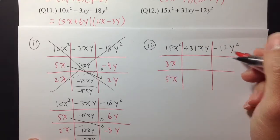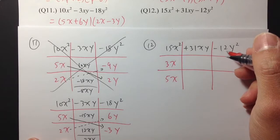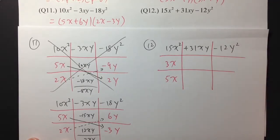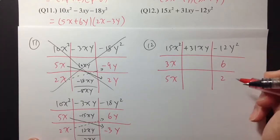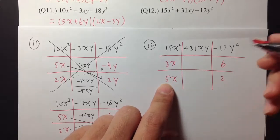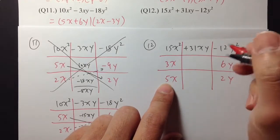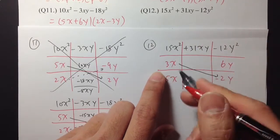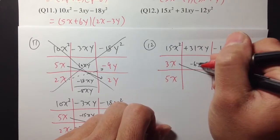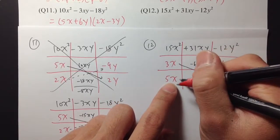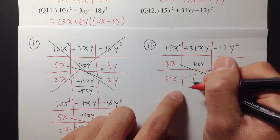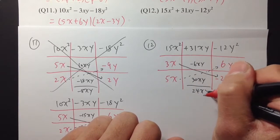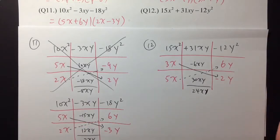Let me put a 6 right here and a 2 right here — because I will produce a 30. Y and y. And let me make this negative for now. So if we do 3x times negative 2y, that's negative 6xy. And 5x times 6y is 30xy. Negative 6xy plus 30xy is 24xy, which is not the correct combination. We didn't get 31 in the middle.